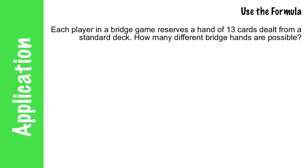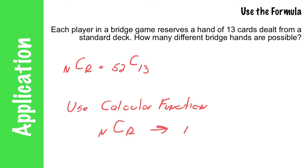Let's use the formula again. Each player in a bridge game reserves a hand of 13 cards dealt from a standard deck. Let's take a look at how many different bridge hands are possible. Now we're at the stage where we're using NCR. And we have a group of 52 from which we are choosing 13. You can now use your calculator button, function button, whatever you want to call it. And it is the NCR button, from which you will input the N and then the R. So if you input 52 choose 13, you will get approximately 635 billion possible bridge hands.